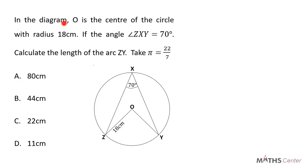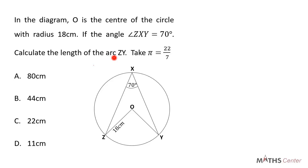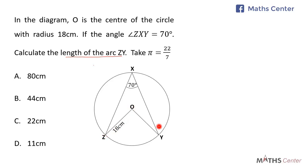In the diagram, O is the center of the circle with radius 18 centimeters. If the angle ZXY is equal to 70 degrees, calculate the length of the arc ZY. Take pi as 22 divided by 7. This is a multiple choice question. To find the length of arc ZY, we will first have to find the angle of the sector, that is angle ZOY.